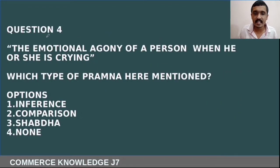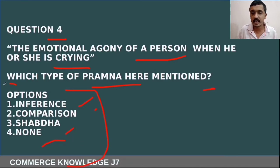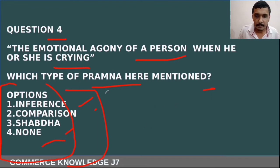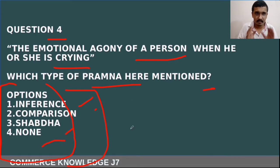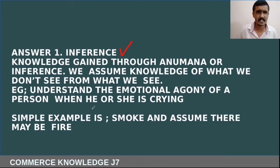The fourth question: 'The emotional agony of a person when he or she is crying' — which type of pramana is mentioned here? The options are inference, comparison, shabda, and none of these. This is a somewhat tricky question. Inference is the right answer.